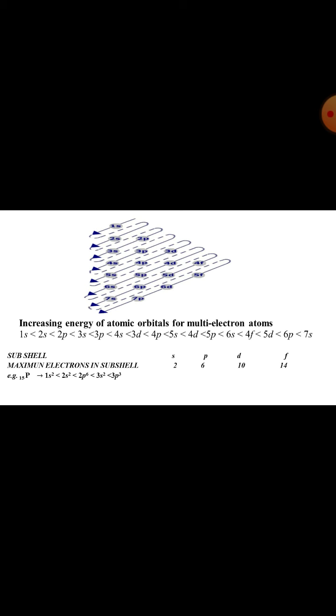Like this, you have to take many examples of elements and write the electronic configuration. This electronic configuration helps you to find the number of blocks, in which block the element belongs, group number, and also number of periods.